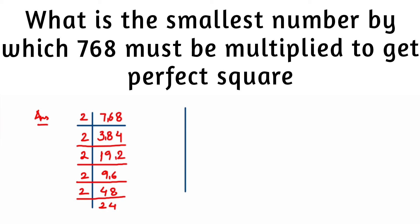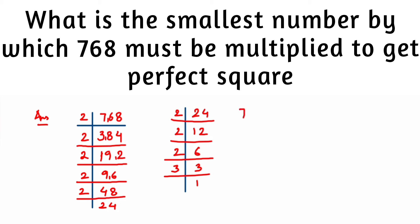Continuing the factorization: 24 ÷ 2 = 12, 12 ÷ 2 = 6, 6 ÷ 2 = 3, and finally 3 ÷ 3 = 1. So we can write 768 = 2 × 2 × 2 × 2 × 2 × 2 × 2 × 2 × 3.